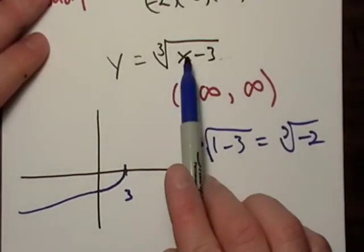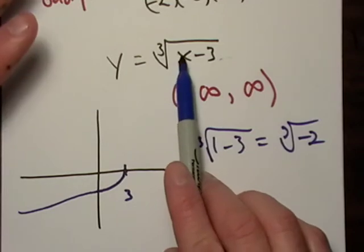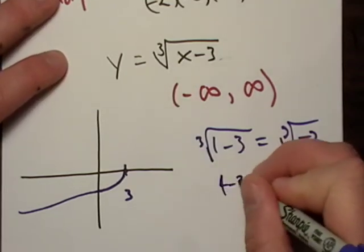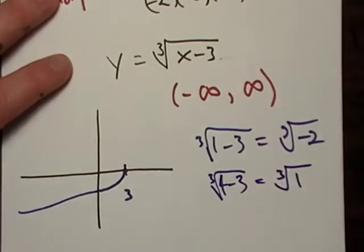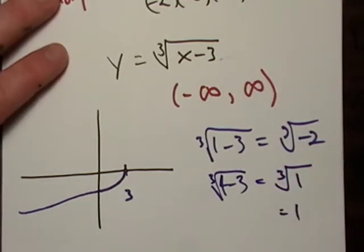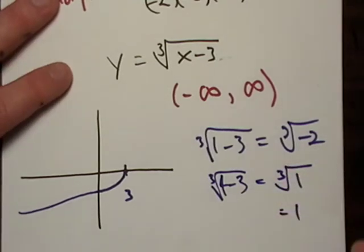Okay? And likewise, if I go bigger than 3, say I put 4 in here. We go 4 minus 3, I end up with the cube root of 1, don't I? Which is just 1, because 1 times 1 times 1 is 1. Okay? So I end up with a positive number.